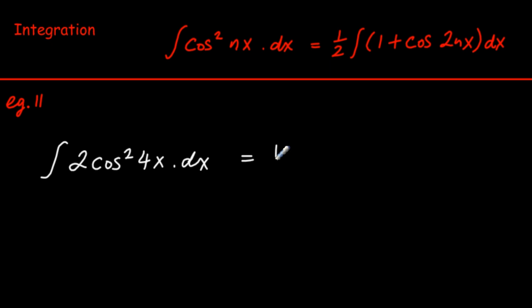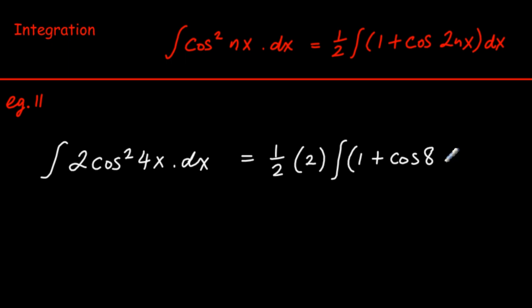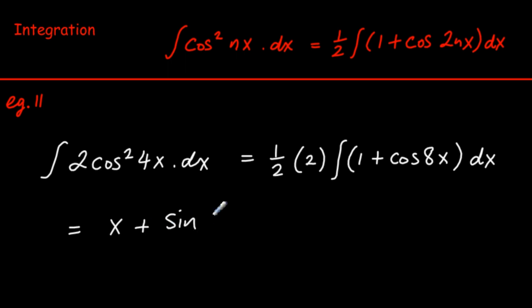Example 11 is a similar type with cos². We take the 2 outside, and using the rewrite rule, we rewrite the integral as one-half times 2, giving the integral of (1 + cos 8x) dx. Integrating both parts: the integral of 1 dx is x, and the integral of cos 8x is sin 8x divided by 8. Adding the constant of integration — it's very important to learn this example, as it is commonly specified in the syllabus.